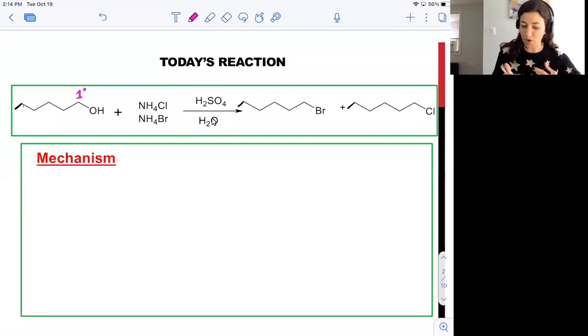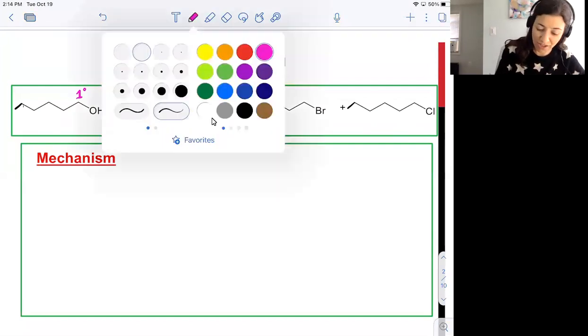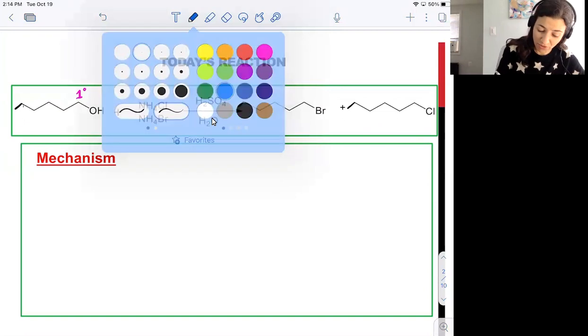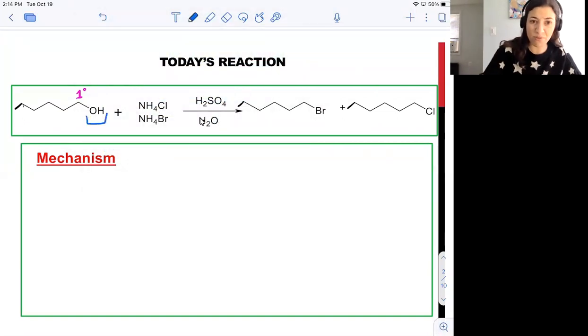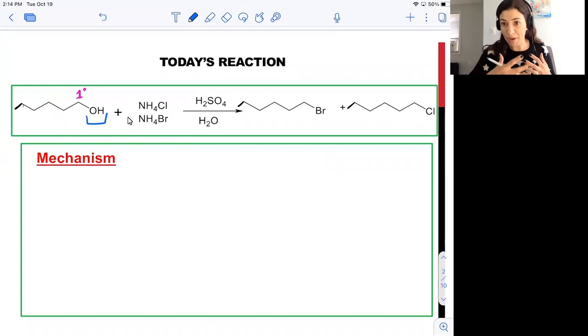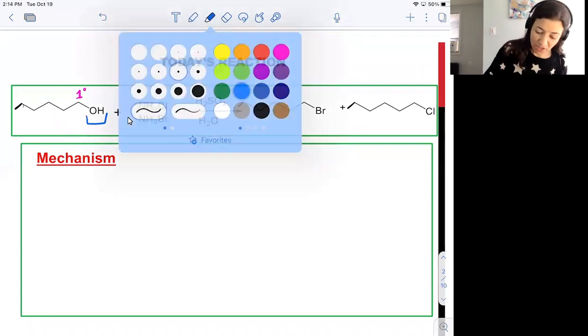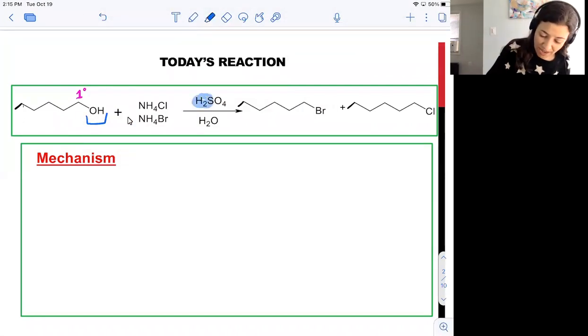We know that the requirement for an SN2 reaction is to have a good leaving group. However, when we look at the substrate we've been given, OH- is not usually thought of as a great leaving group. That's where the sulfuric acid is going to come into play for us. The sulfuric acid is going to act to protonate this oxygen of the alcohol, making water, which is an excellent leaving group.